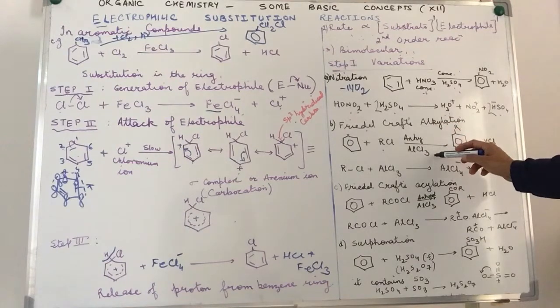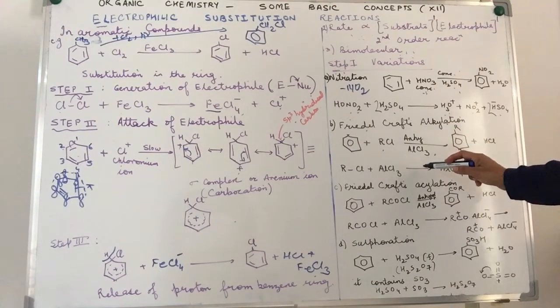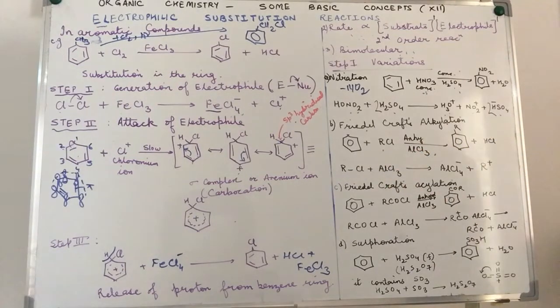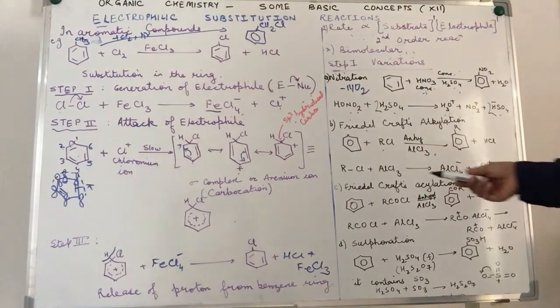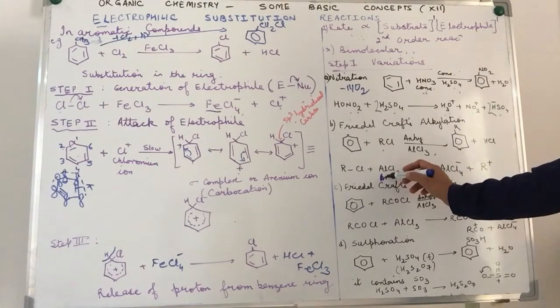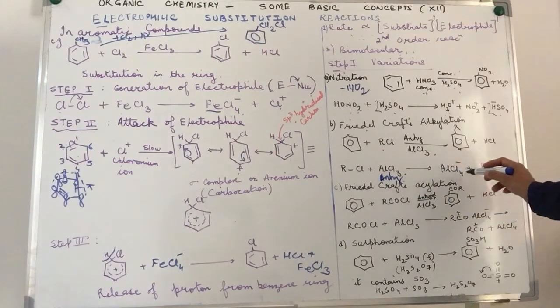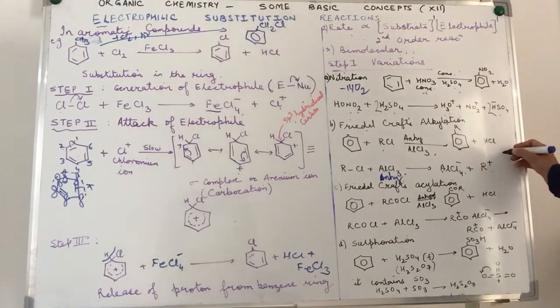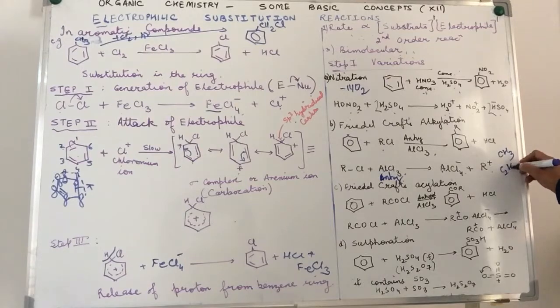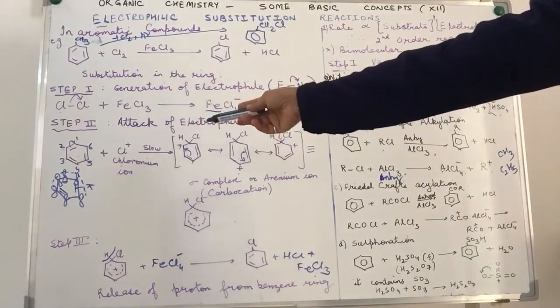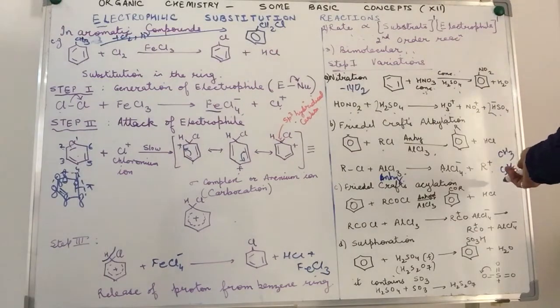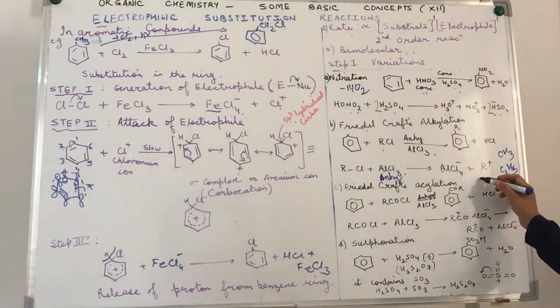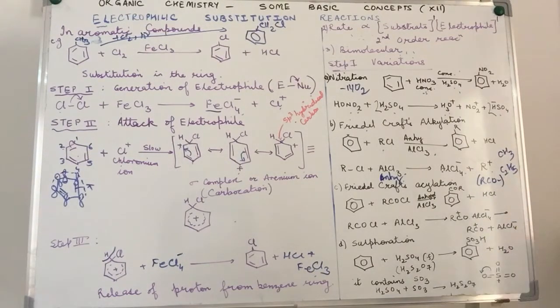Let's talk about Friedel-Crafts alkylation. It means replacement of the hydrogen of the benzene ring by an alkyl group in the presence of anhydrous AlCl3. How is the electrophile generated? We have an alkyl halide like C2H5Cl or CH3Cl, and anhydrous AlCl3 has vacant orbitals, producing AlCl4- plus R+. This R is actually any alkyl group like CH3 or C2H5. In the second step, the Cl gets replaced by the alkyl group.